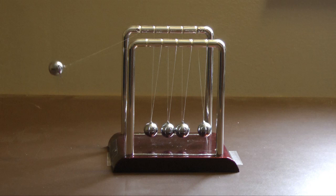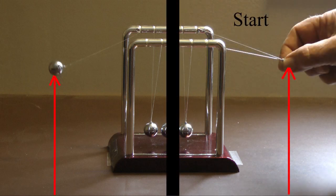If the collision were completely efficient and there was no friction acting on the system, this last sphere would rise to the same height as the start position. Energy is conserved.